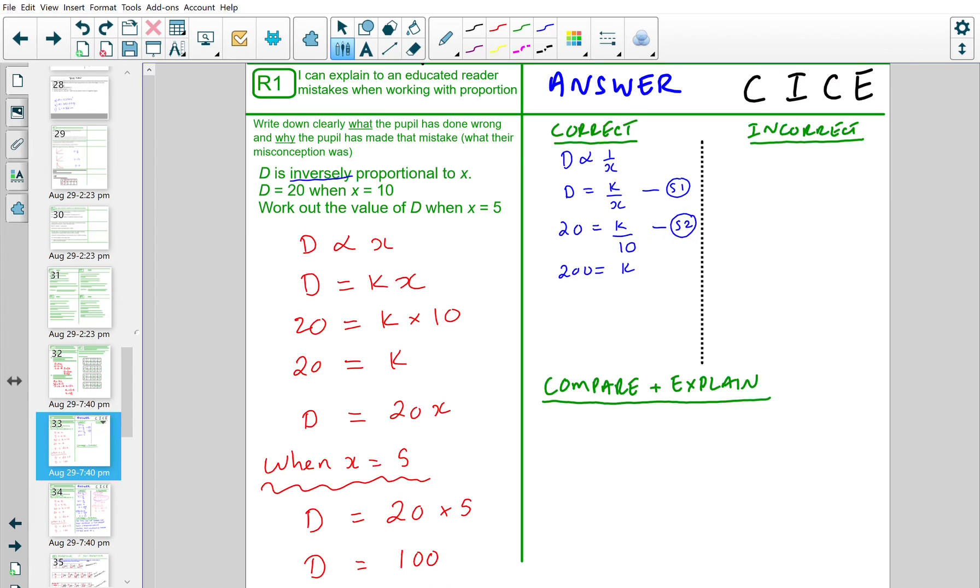And then one final step, we substitute k back into step 1. So finally, D would equal the value of k is 200 over x. This is step 3. Now, let's go back to the question to check if we have answered it. Look what it says. Work out the value of D when x is equal to 5.